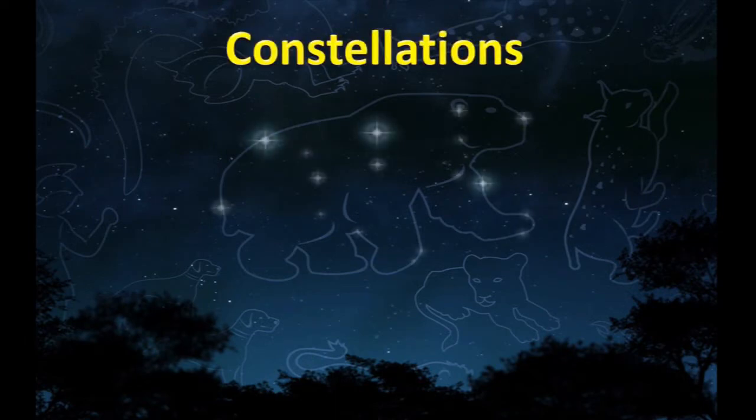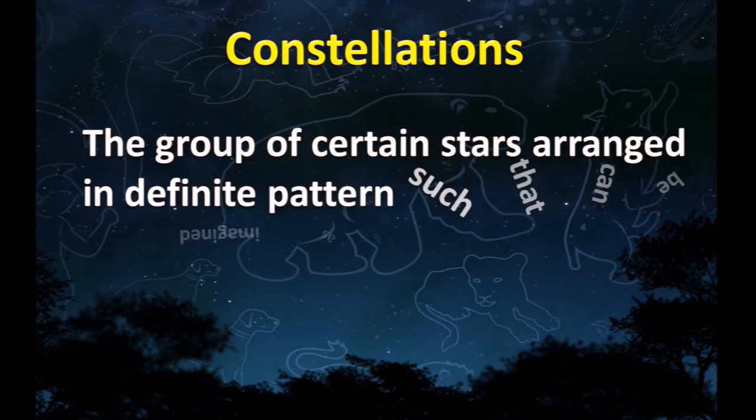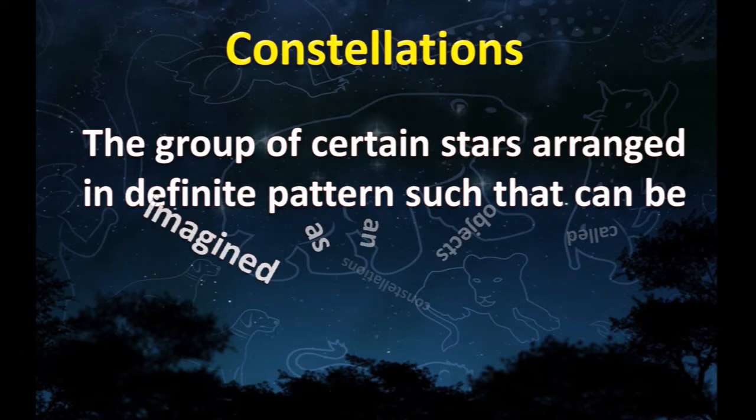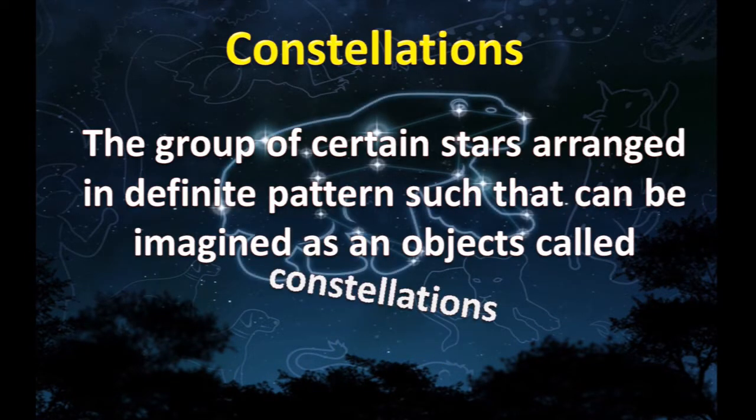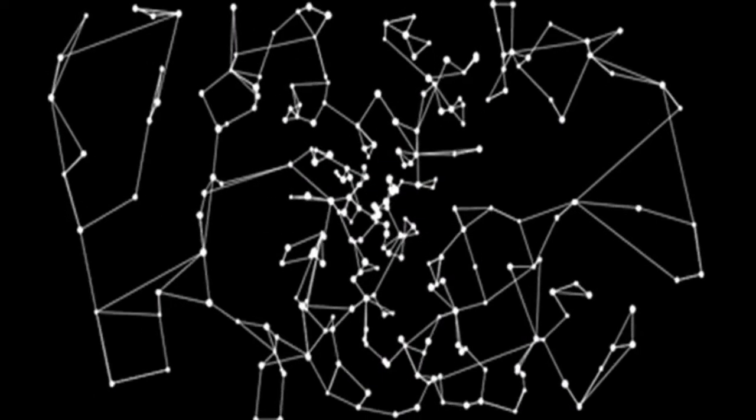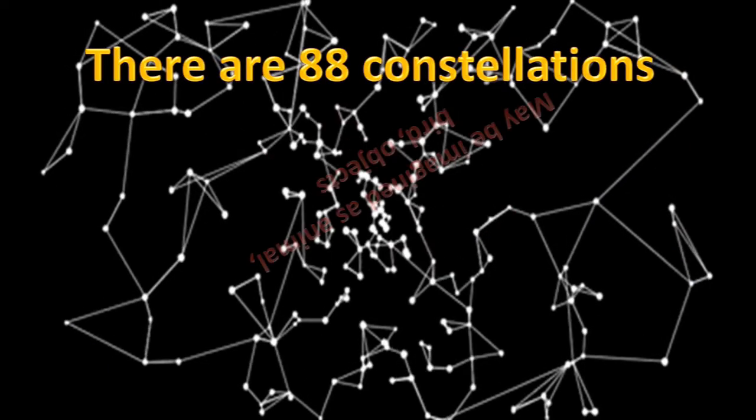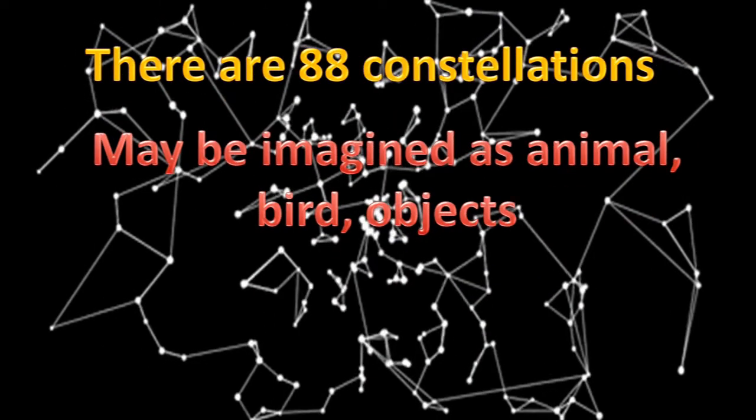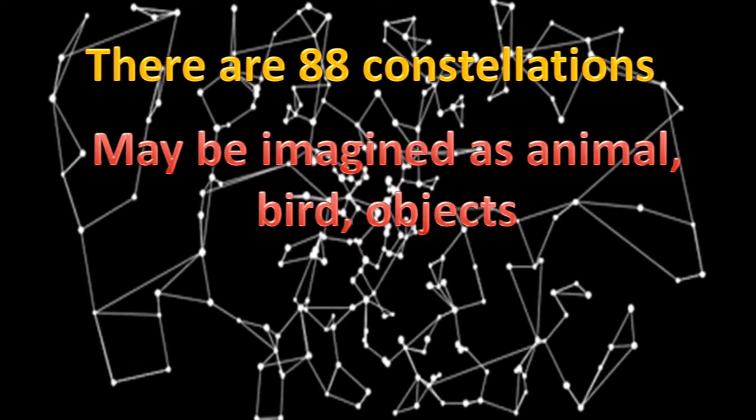Constellations. The group of certain stars arranged in definite pattern such that can be imagined as objects called constellations. There are 88 constellations may be imagined as animal, board, or objects.